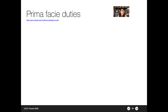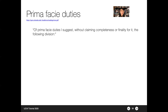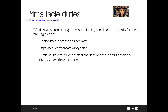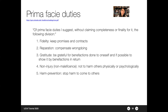The Prima Facie Duties that Ross suggested — and there is a link to the original paper on the slide — include: fidelity, that one should keep promises and contracts; reparation, that one should compensate for wrongdoing; gratitude, to be grateful for benefactors and show it in return; non-injury or non-maleficence, not to harm others physically or psychologically; harm prevention, to stop harm coming to others; and beneficence, the duty to do good to others.